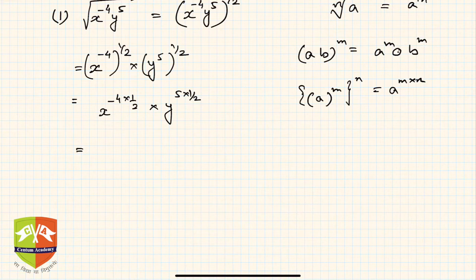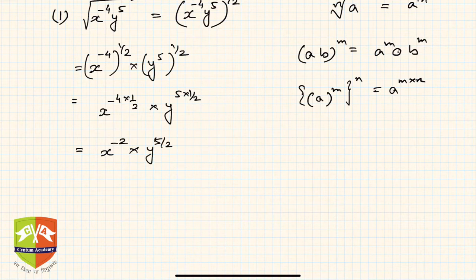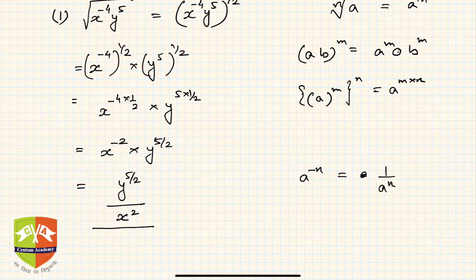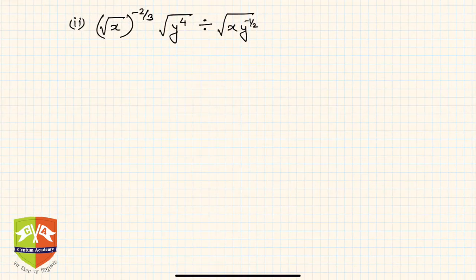I'm writing these rules repeatedly so they get reinforced in your mind. x to the power minus 4 times half is simply x to the power minus 2, and y to the power 5 by 2. Now, since a to the power minus n equals 1 upon a to the power n, we write x to the power minus 2 as 1 over x squared. So the final answer is y to the power 5 by 2 divided by x squared. We cannot simplify it further.